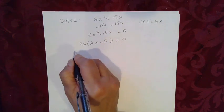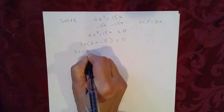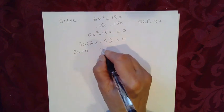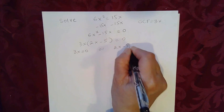Setting each factor containing a variable equal to 0, that's 3x equal to 0. Or, 2x minus 5 equal to 0.